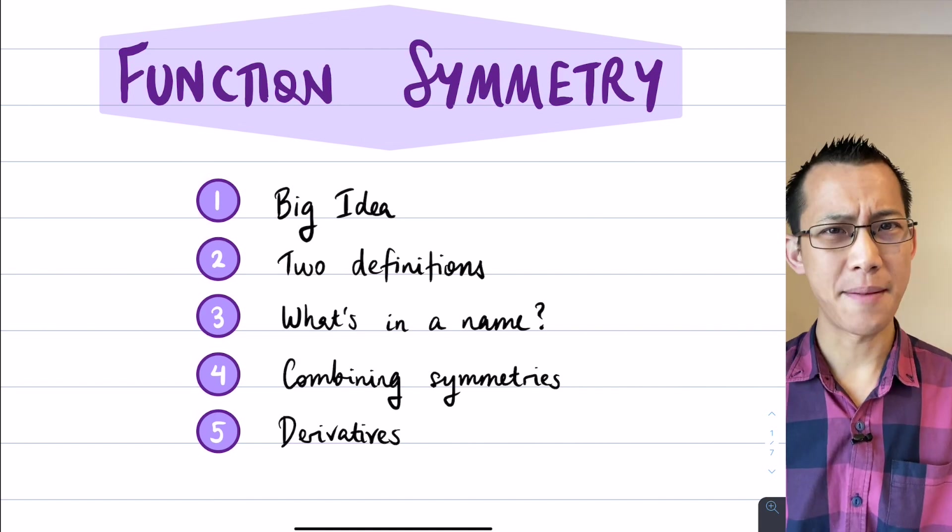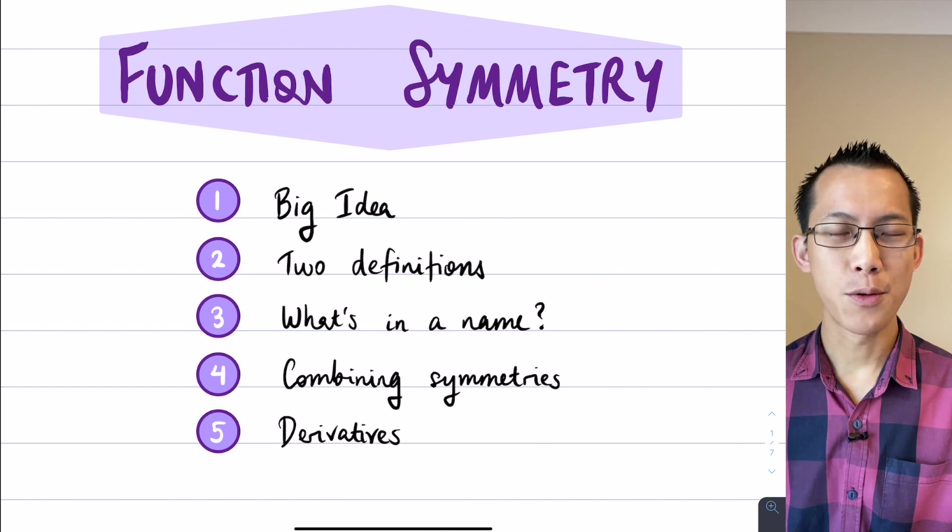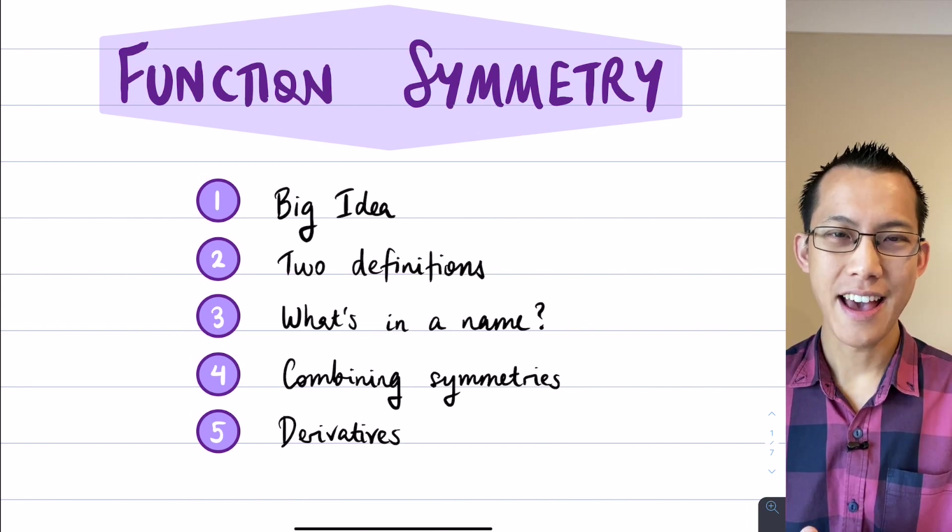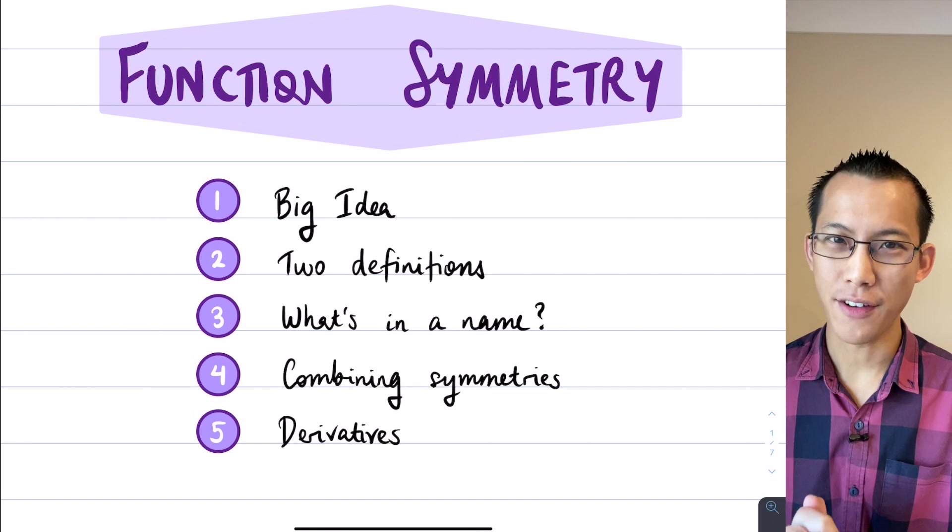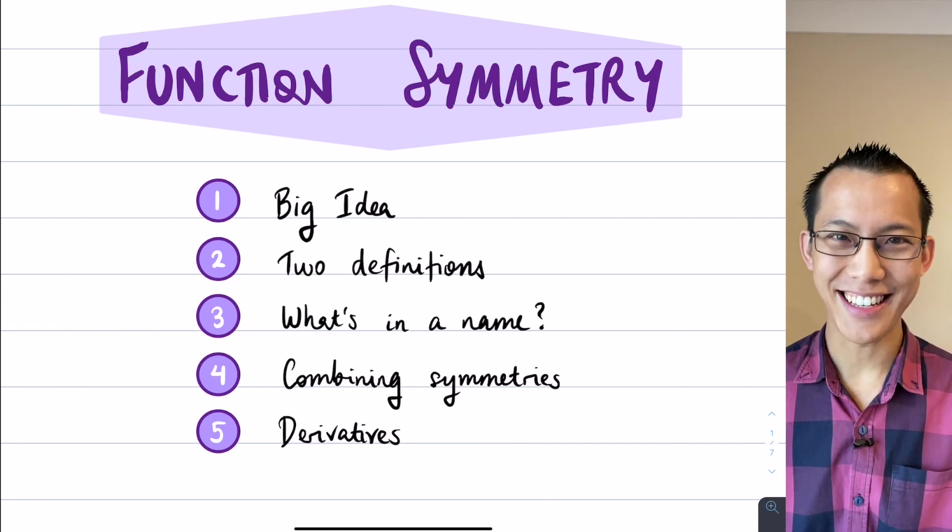Importantly, we'll look at what happens when you have different kinds of symmetries and you join them together. And then lastly, we'll kind of go full circle and return to this idea of calculus and see one of the applications in function symmetry. So that's the roadmap, let's get started.